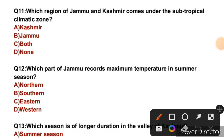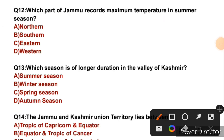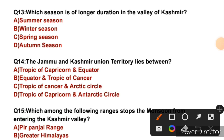Question 11: Which region of Jammu and Kashmir comes under the subtropical climatic zone? That is the Jammu region, so the right answer is B. Question 12: Which part of Jammu records maximum temperature in the summer season? That is the southern part, so the right answer is B. Question 13: Which season has the longest duration in the Kashmir Valley? That is the winter season, so the right answer is B.